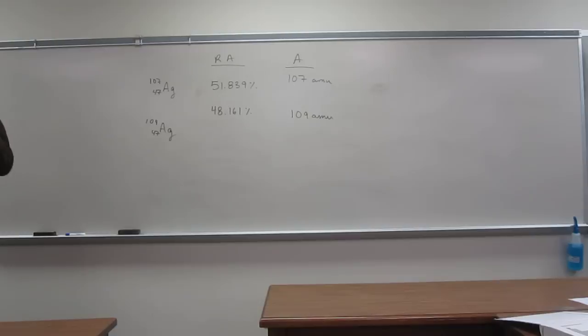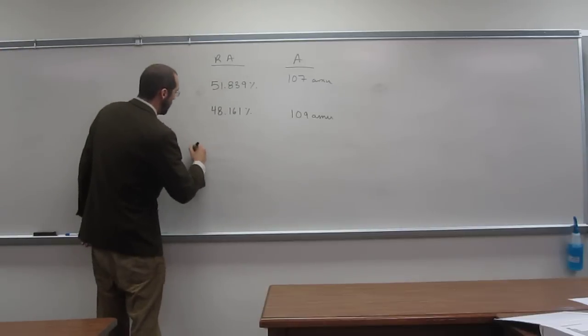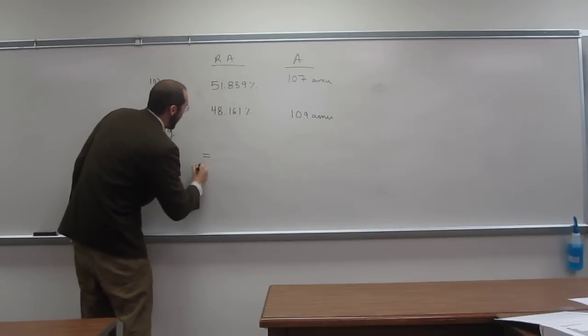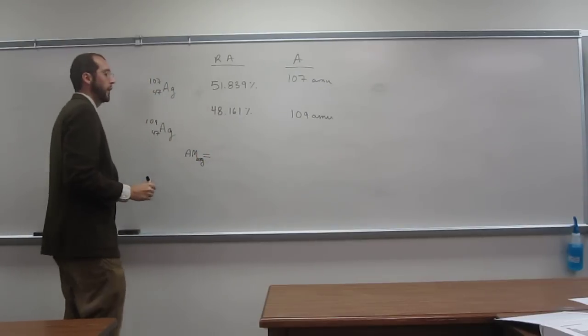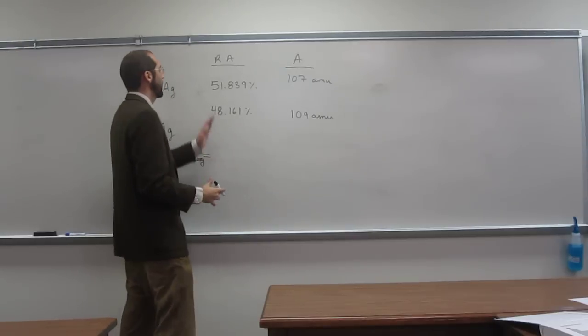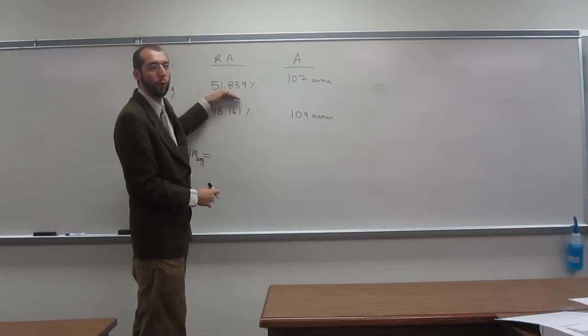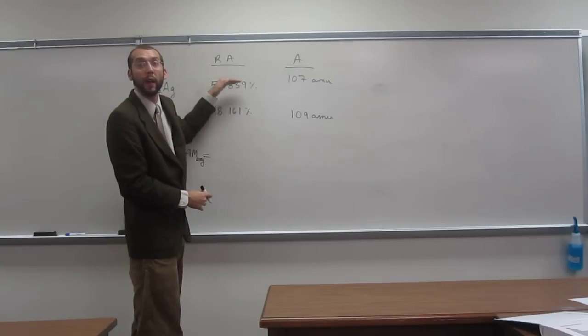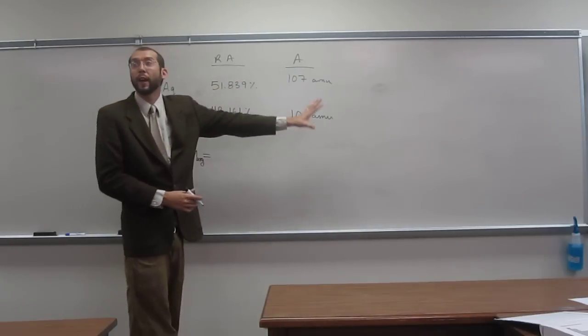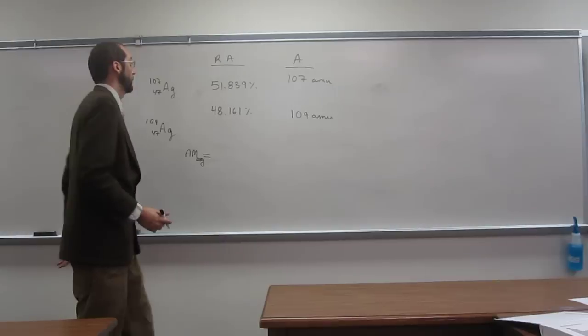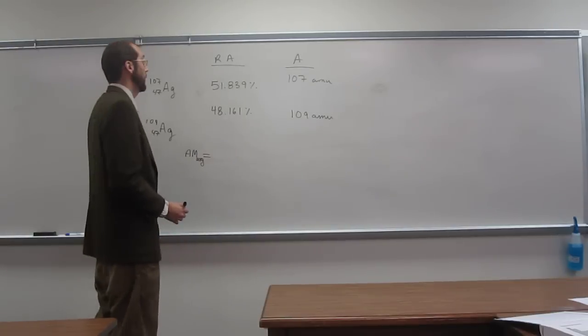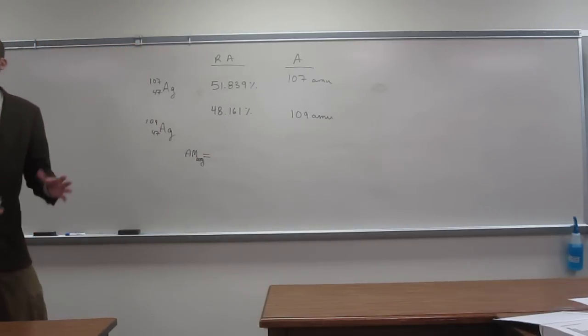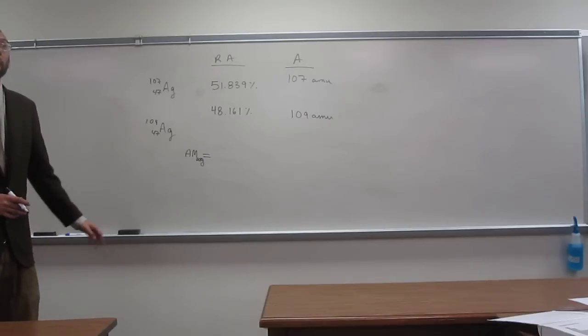Now we want to figure out how do we get to the average atomic mass. So the average atomic mass is going to be, you can do this two ways. You can turn this into a decimal right away if you want, so divide both of these by 100 percent. Or you can divide it at the end by 100 percent. So let's just divide it at the end by 100 percent.